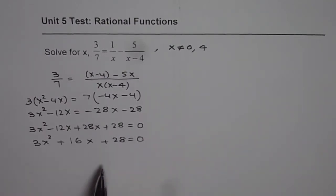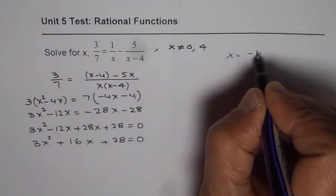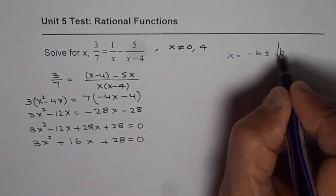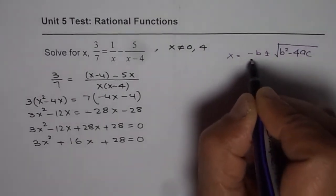Now we need to solve this quadratic equation to find possible answers. So we can use quadratic formula: x equals minus b plus minus square root of b square minus 4ac divided by 2a.